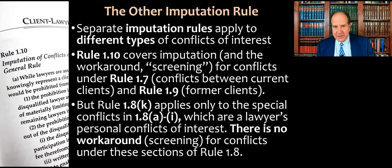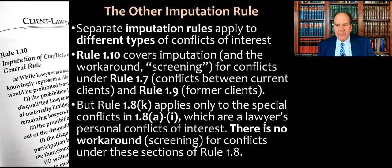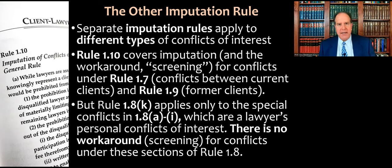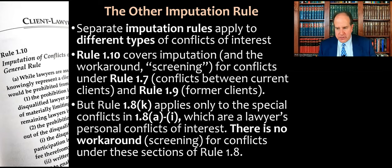This is a confusing subject, and you need to understand it for purposes of the exam and the MPRE. Separate imputation rules apply to different types of conflicts of interest. Rule 1.10 covers imputation and the workaround — called screening — for conflicts under Rule 1.7, which covers conflicts between current clients, and Rule 1.9, which applies to former clients. So if it's a conflict under 1.7 or 1.9, the imputation rules of 1.10 apply. But 1.8K applies only to the special conflicts in 1.8 sections A through I, which are all different types of a lawyer's personal conflicts of interest. Notice that there's no workaround or screening for conflicts under these sections of Rule 1.8.